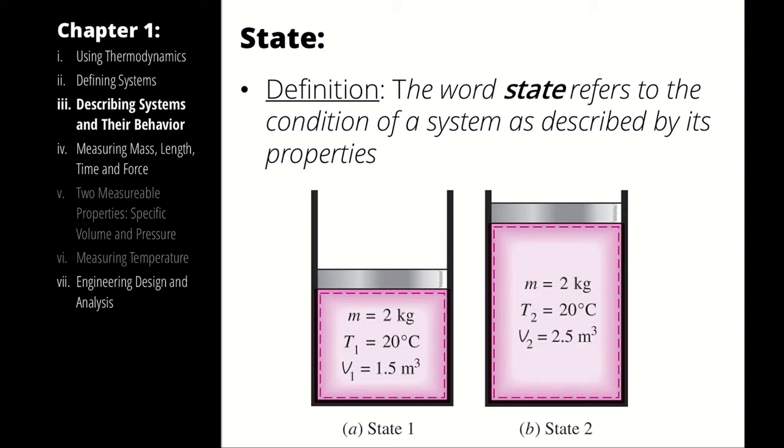Next definition. A state refers to the condition of a system as described by its properties. A state could refer to a point in space, it could refer to a point in time, or it could refer to a point in space and time. For example, if we were considering the expansion of some gas, and we knew the mass and temperature and volume at the beginning, and we knew the mass and temperature and volume at the end, we could describe those as two distinct states, and apply properties to those states.